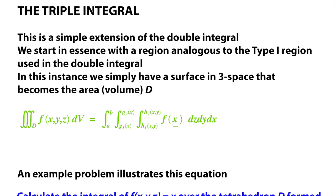In this instance we simply have a surface in 3-space that becomes our area, our volume actually, d. And here's our equation. We have the triple integral over this volume d of a function in 3 variables that is over some differential volume.